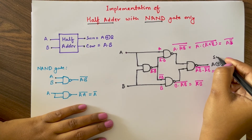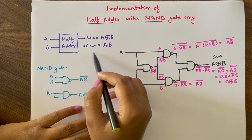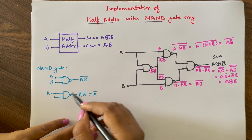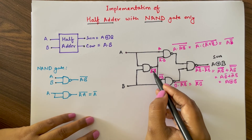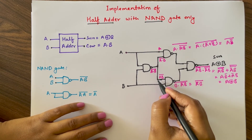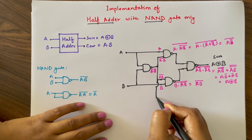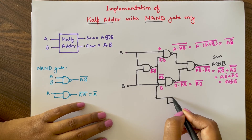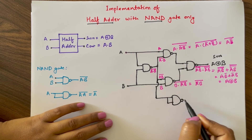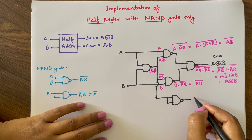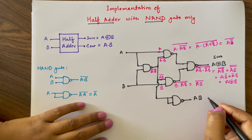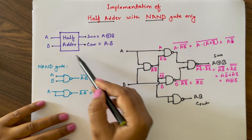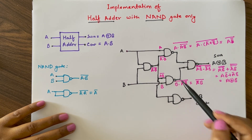So the output of this circuit will be the sum of the half adder. For realizing the carry output of the half adder we need A dot B. We have A dot B bar here, so we will add one more NAND gate which will invert this term and give A dot B. Take one input from here — this is A dot B bar — and give it to a single-input NAND gate. The NAND gate will invert the input and give A dot B, so this is C out. For realizing a half adder, five two-input NAND gates are required.